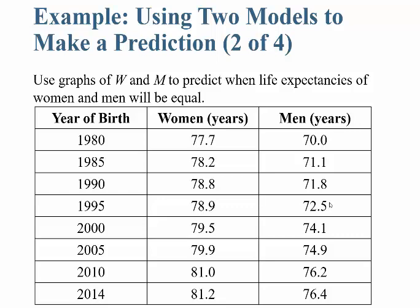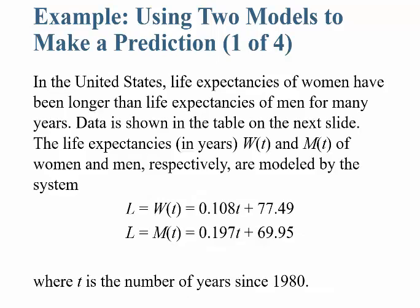I want to use graphs of W and M to predict when life expectancy of men and women will be equal. Because the slope of men is higher than the slope of women, it eventually should actually overtake women.